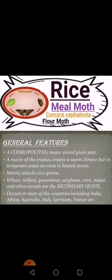Primarily it makes attacks on rice, while as secondary host it attacks wheat, millets, groundnuts, sorghum, and corn. It is mostly present in many countries including India, Africa, Australia, Italy, Germany, and France. Most of these are hot countries with a hot climate, which is why Corcyra cephalonica can exist there.